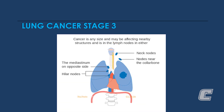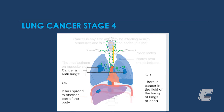This example shows stage 3 cancer where the tumor is in the left lung, but there is lymph node involvement in the center of the chest as well as areas where lymph nodes are near the chest. Stage 4 lung cancer is an example where the tumor is in both lungs, and there is also tumor in the liver and tumor involvement in the fluid surrounding the left lung as well as the heart.